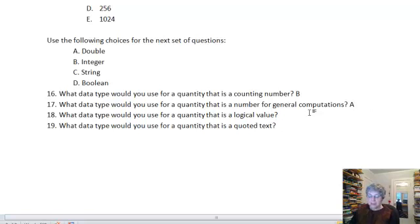What about a logical value? That's a Boolean, d. And what about quoted text? Well, that would be a string, c.